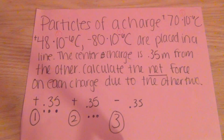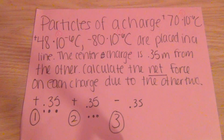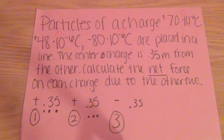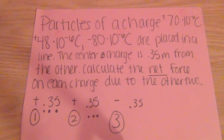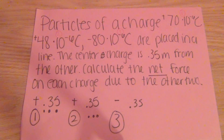The problem reads: particles of charge positive 70 times 10 to the negative 6 coulombs, positive 48 times 10 to the negative 6 coulombs, and negative 80 times 10 to the negative 6 coulombs are placed in a line. The center charge is 0.35 meters from the others. Calculate the net force on each charge due to the other two. A diagram of what this problem looks like is right here.